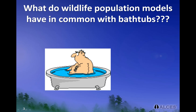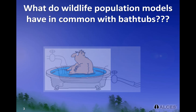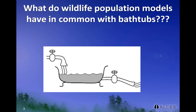One way of thinking about trend in wildlife populations is to use the analogy of a bathtub. A bathtub can be filled with water from the tap or emptied through a drain. The volume of water flowing into the tub is controlled by a valve on the tap, and the rate at which water is emptied is controlled by a valve on the drain pipe.